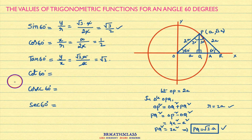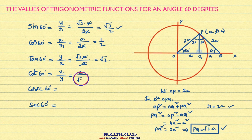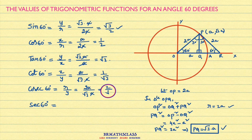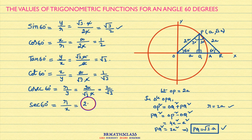From the definition of trigonometric functions, cot θ is defined as X divided by Y. The X coordinate is A divided by the Y coordinate, which is root 3 times A. The A's cancel, giving cot 60 degrees equals 1 by root 3. For cosec 60 degrees, cosec θ is defined as R divided by Y. R is 2A divided by the Y coordinate, which is root 3 times A. The A's cancel, giving cosec 60 degrees equals 2 divided by root 3. For secant 60 degrees, sec θ is defined as R divided by X. R is 2A divided by the X coordinate A. The A's cancel, giving sec 60 degrees equals 2.